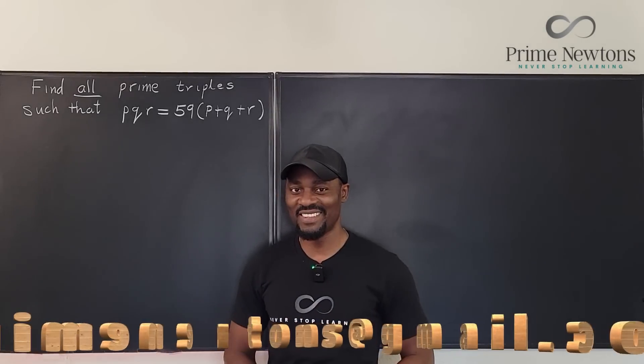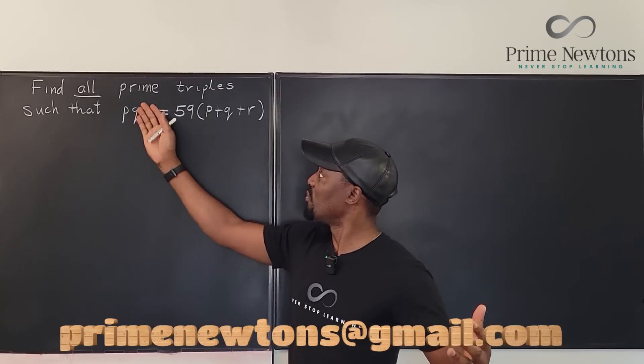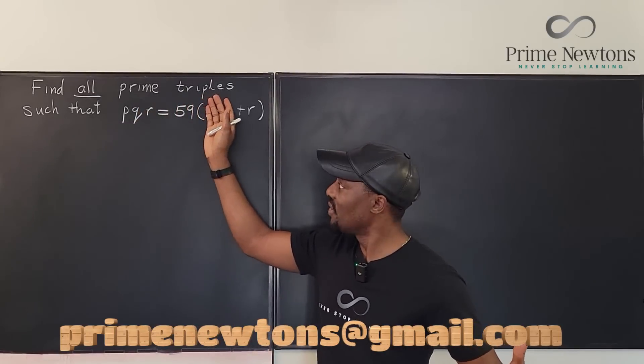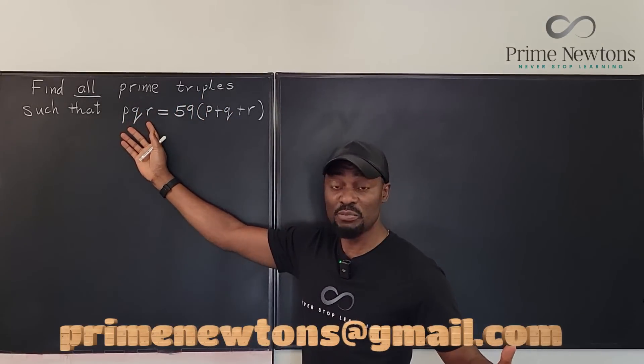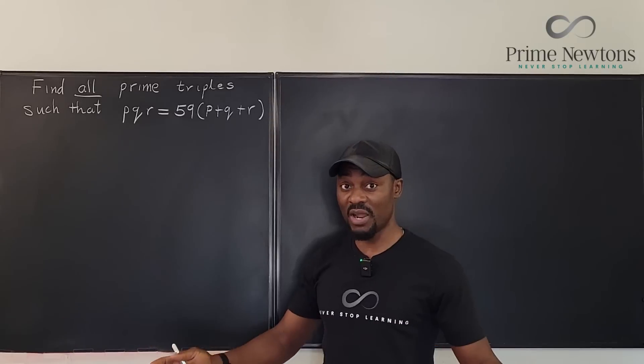Welcome to another video. We're going to find all prime triples such that the product of those prime numbers is equal to 59 times the sum of the prime numbers.